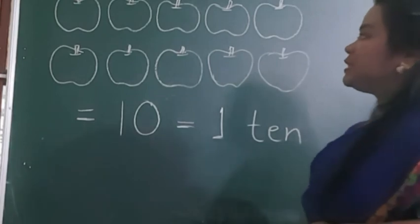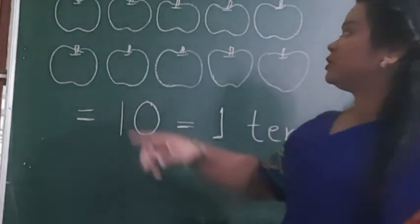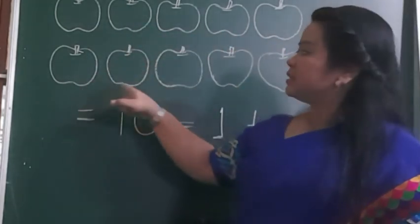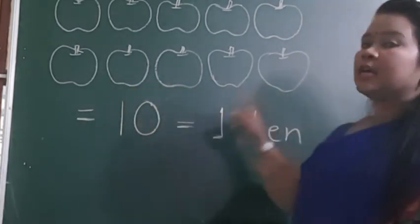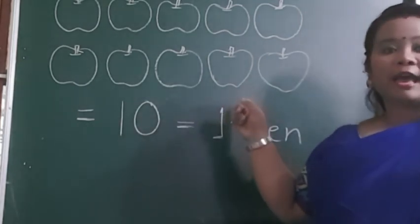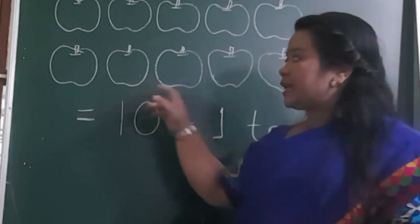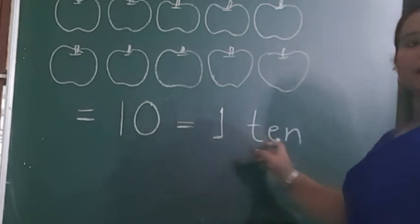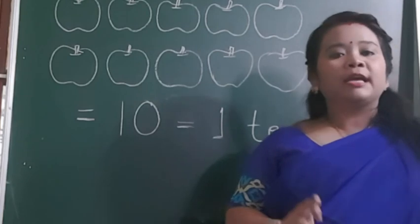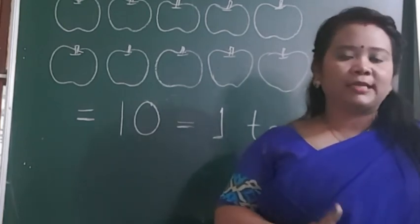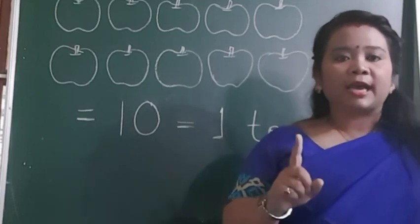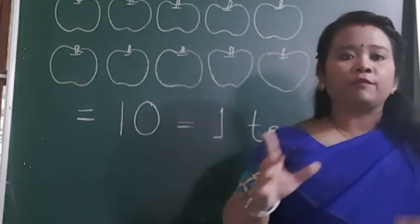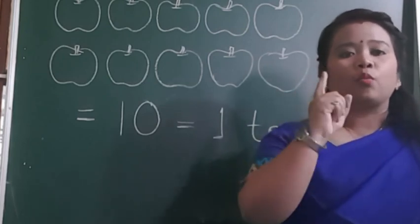How many apples can you see on the board? Let us count: one, two, three, four, five, six, seven, eight, nine, ten. So I have ten apples. I wrote 1, 0 — ten. Ten means one, two, three, four, five, six, seven, eight, nine, ten — as I already told you, ten ones. But we do not write ten ones; we write it as 1 ten. Ten means one ten. If it is a bundle of one set of ten similar things, it is one ten.